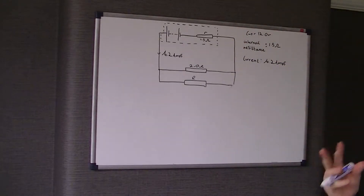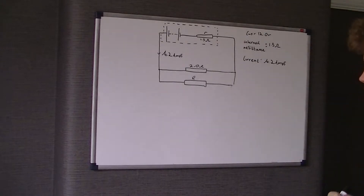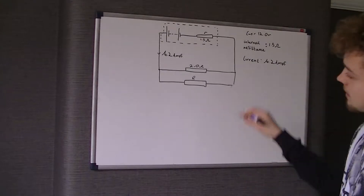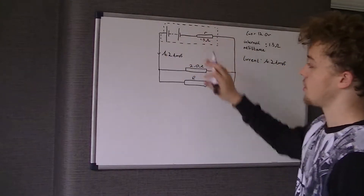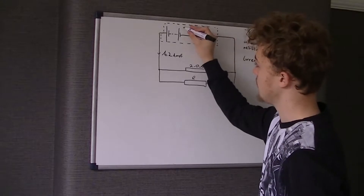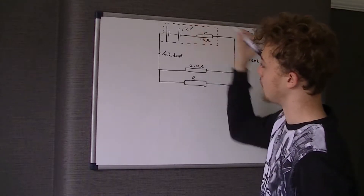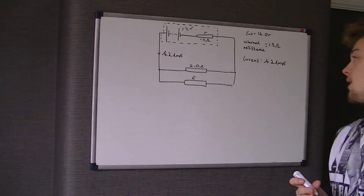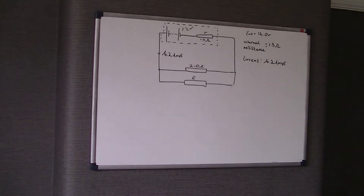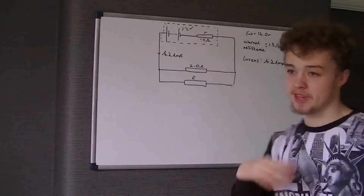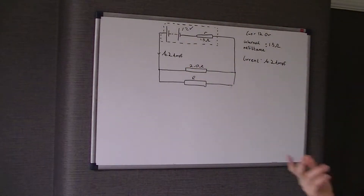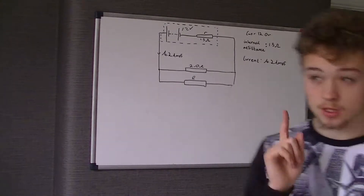I've drawn the circuit given in the exam paper. The first thing to focus on is the dashed box around what we see as a battery with 12 volts and a small resistor of 1.5 ohms. Because that small resistor is inside the dotted line, it is what we call the internal resistor — essentially the internal resistance of the battery.